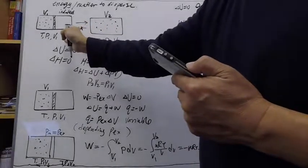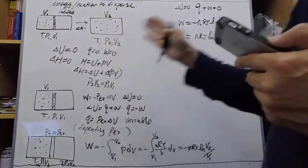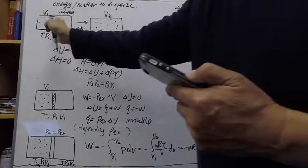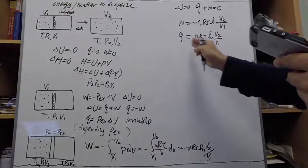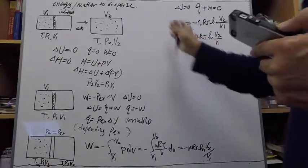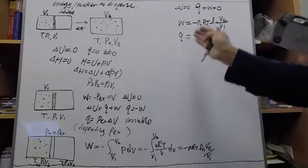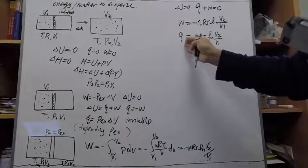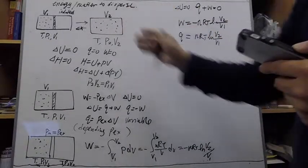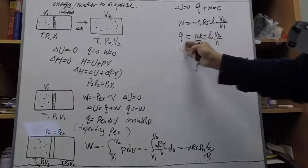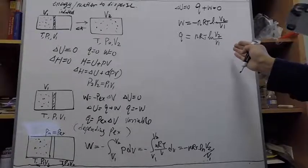Even though the expansion is achieved by simply removing the barrier, we can always say that some part of the system changed — such that if we imagine the system going through an isothermal expansion, there would be a certain amount of heat involved in doing the same thing. We could call this some sort of state property change. There is one problem, however: we are focused on the dispersiveness of the system.